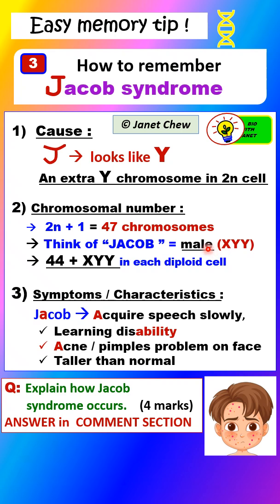Think of the name Jacob — it is the name of a male. So the patient is male and has the sex chromosomes XY normally, but in addition he has an extra Y chromosome, making it XYY. The chromosomal number can be written as 44 autosomes plus three sex chromosomes XYY, whereas a normal man will have just XY. So there are three sex chromosomes in each cell.